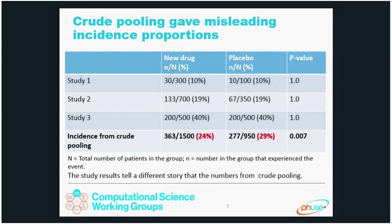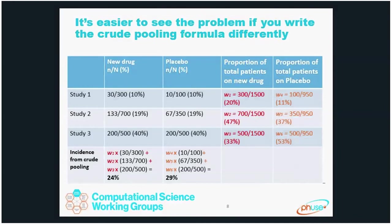It's a little easier to see what went wrong if you write the crude pooling formula differently. You can write it as a weighted average of the individual studies' percentages. The weights are different in each arm and depend on the number of patients in that arm and in each study. For example, in the new drug arm, we had 300 patients in study one and 1,500 patients overall, so the first weight is 300 divided by 1,500. For study two, 700 patients divided by 1,500 gives a weight of 47%.